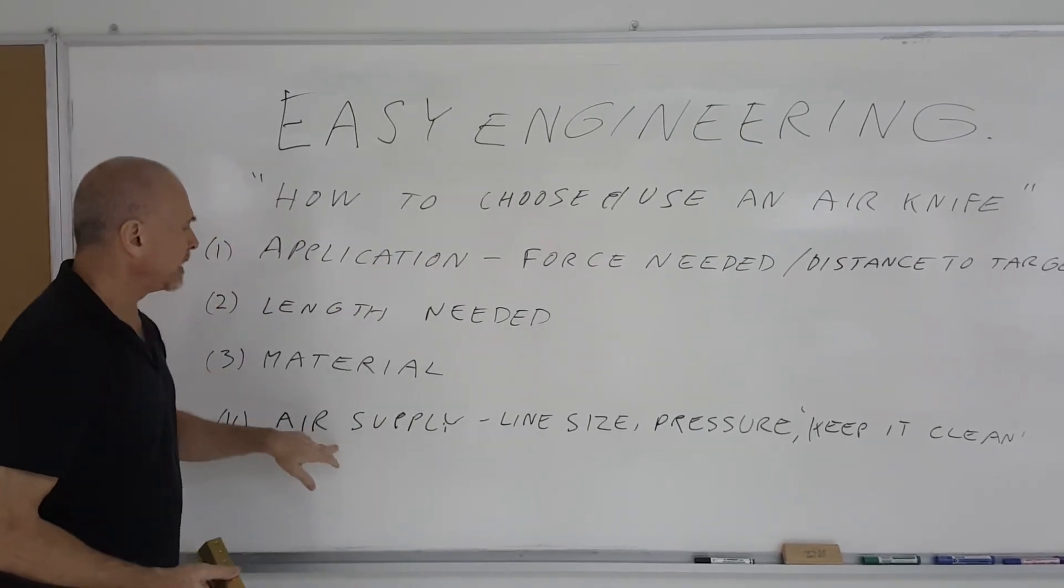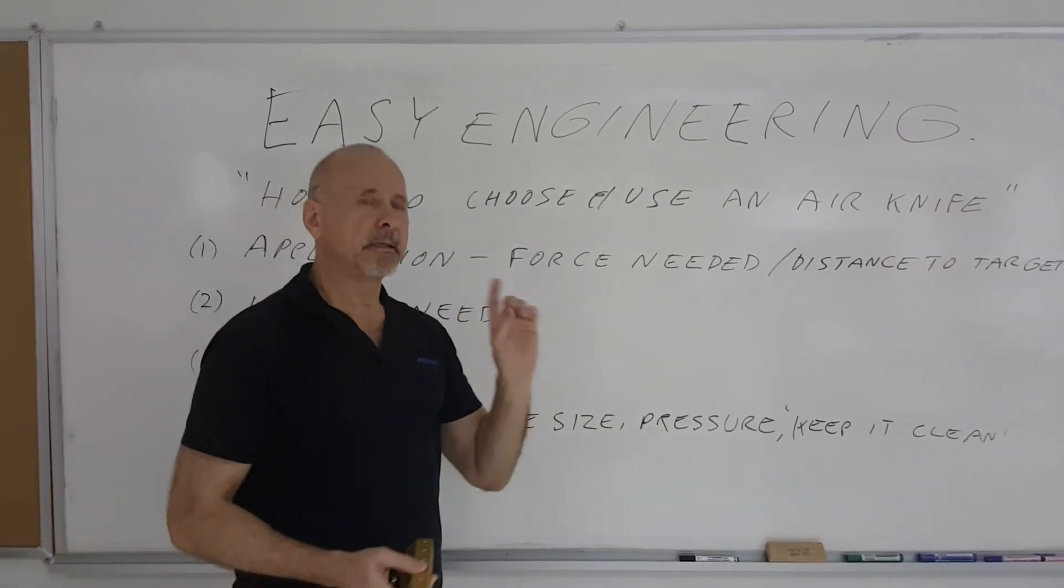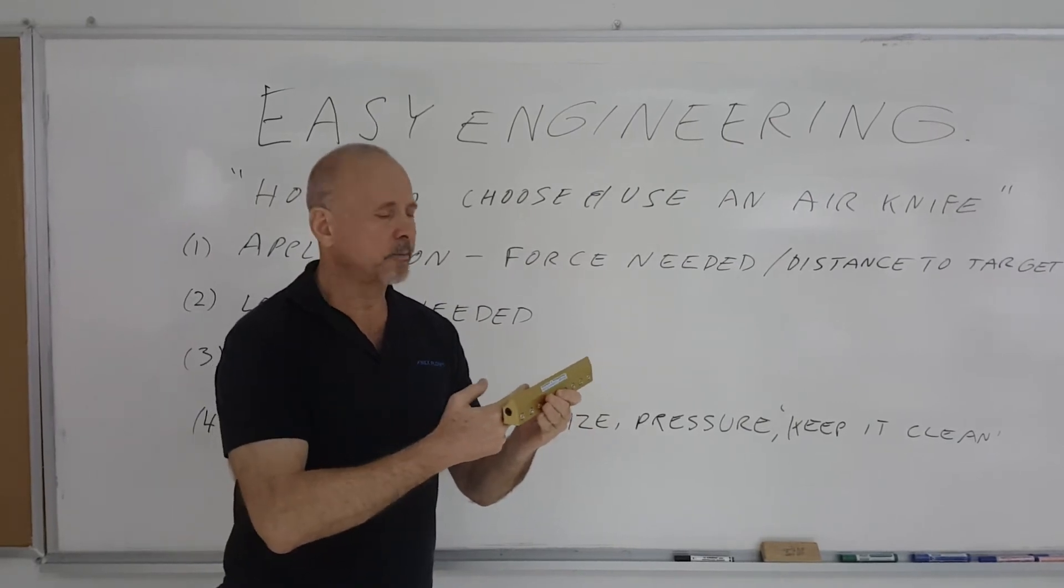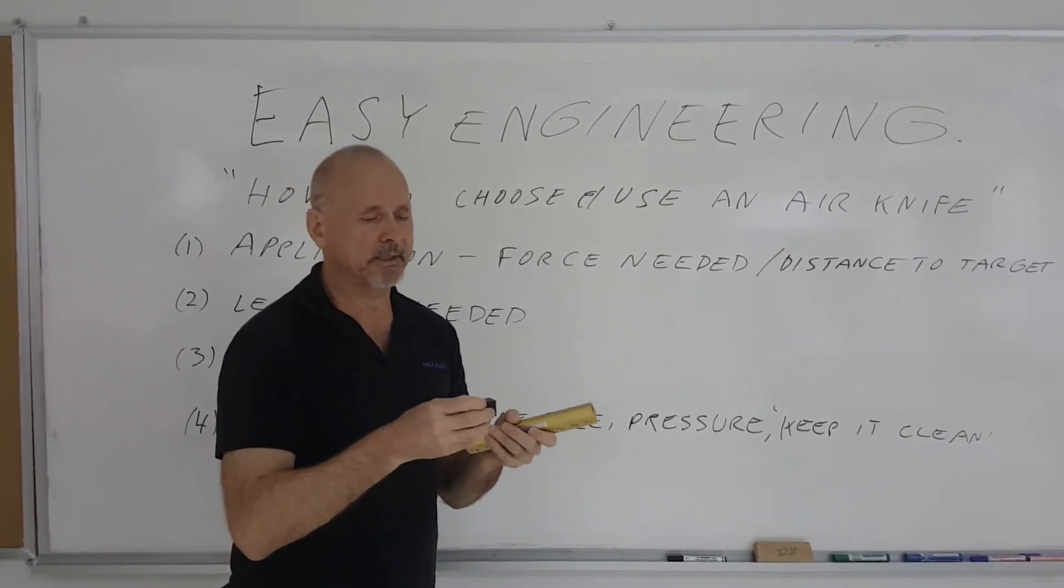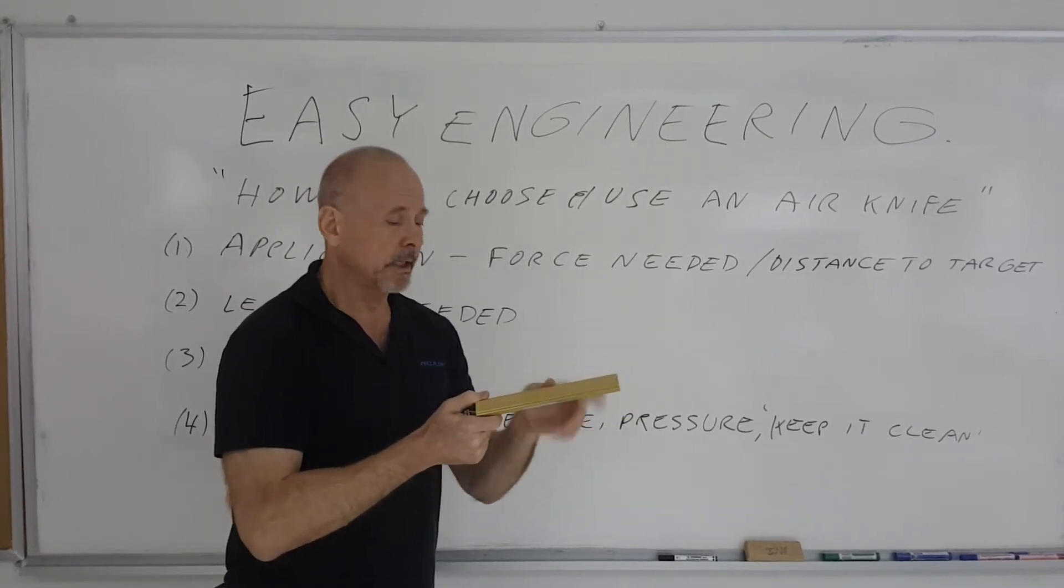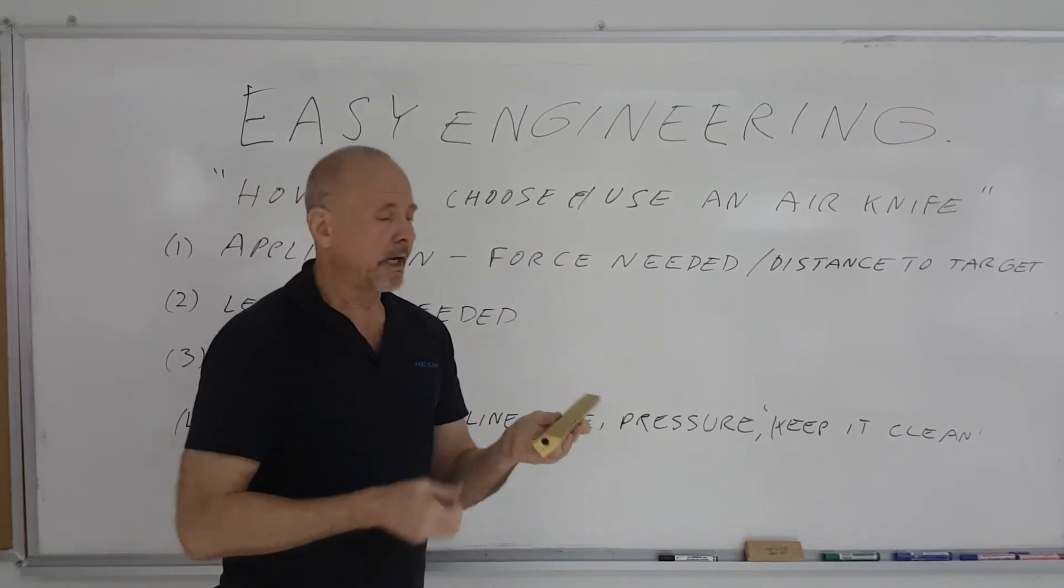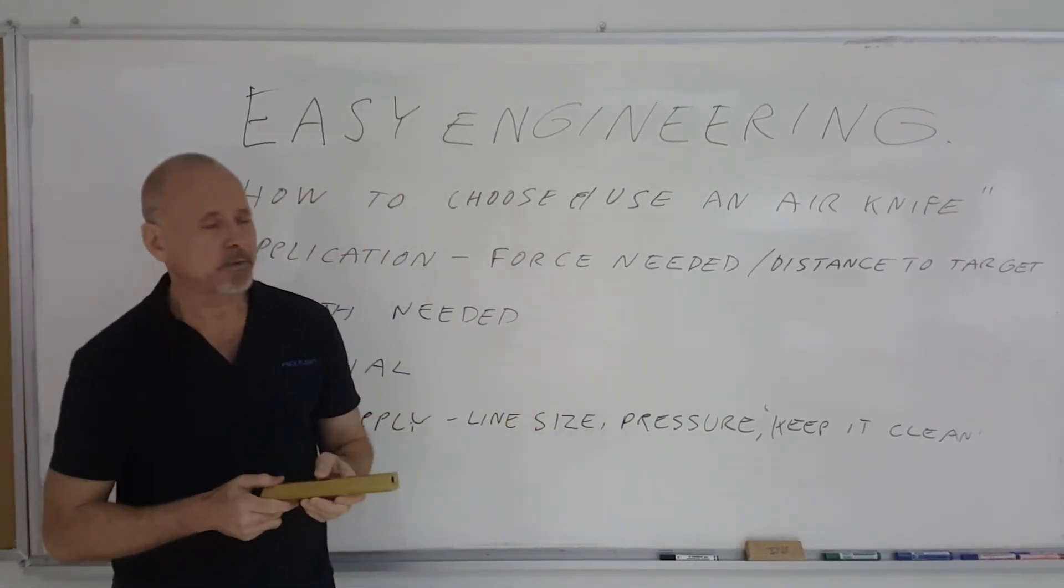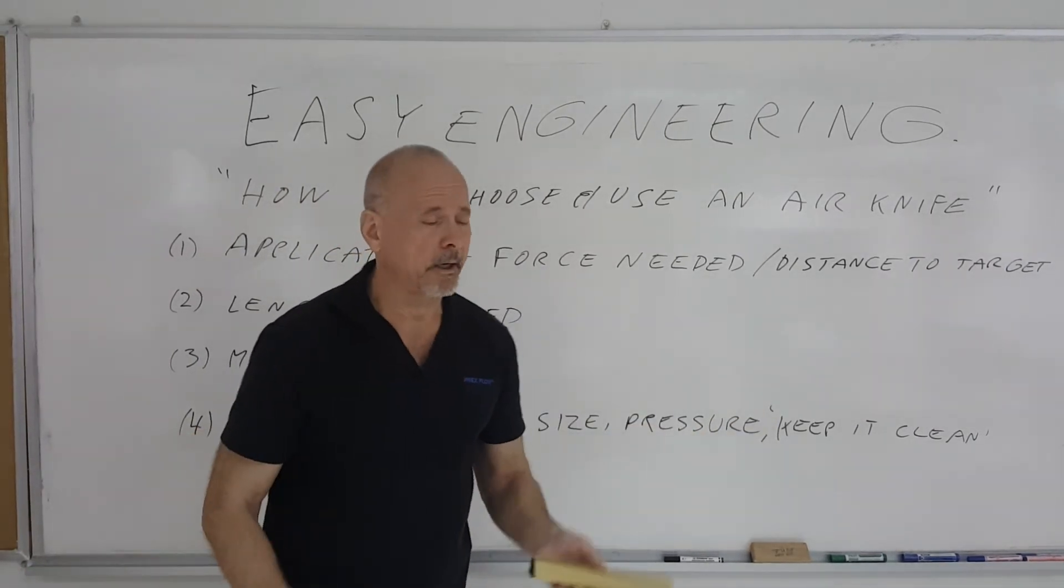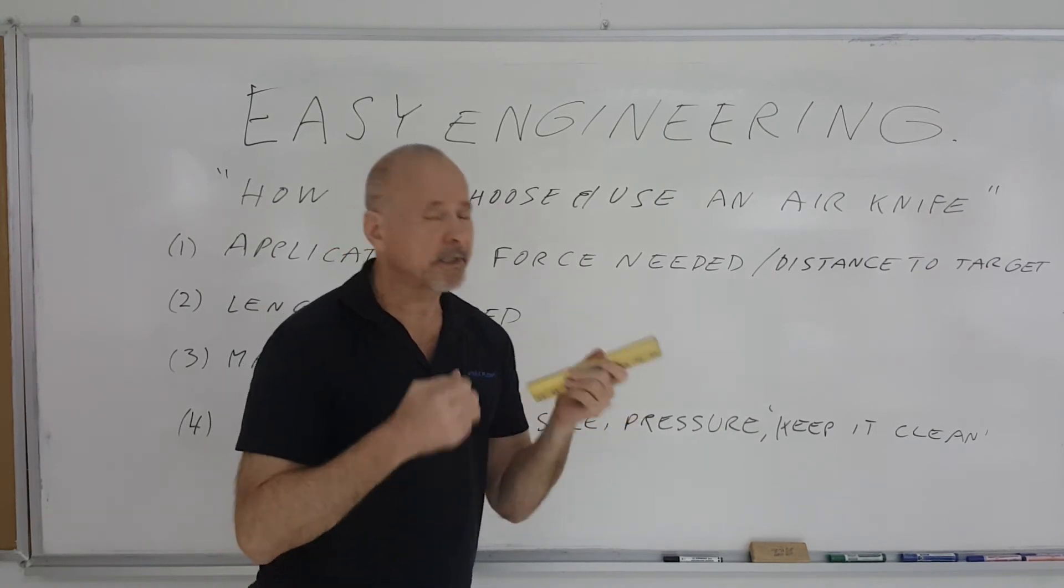Fourth thing I'll look at is the air supply. You want to make sure that the piping or the hose or whatever is delivering that compressor air to the air knife, whether it's a series of flat jets on a manifold or whether it's a continuous length air knife, that that line size is large enough. I have seen a lot of applications where they'll take a very large air knife and they'll have a quarter inch line 10 feet long delivering air to it expecting it to have the force that you require. It's not going to happen.